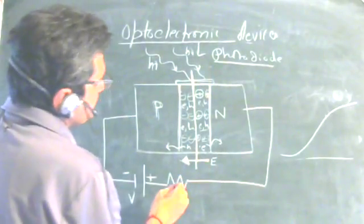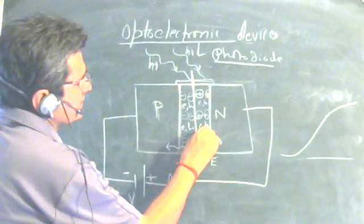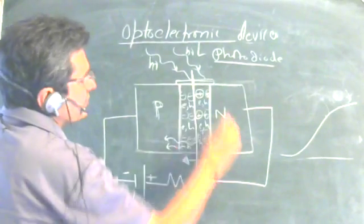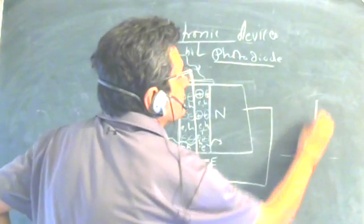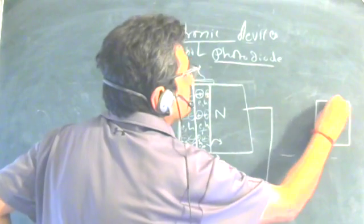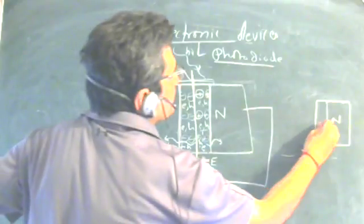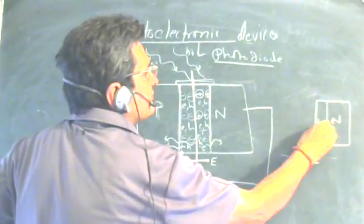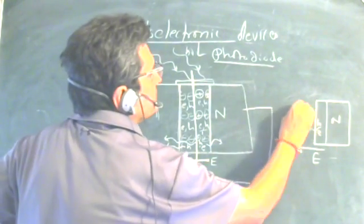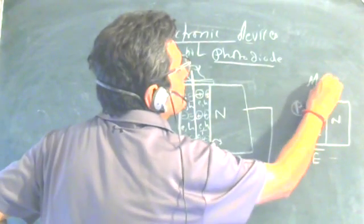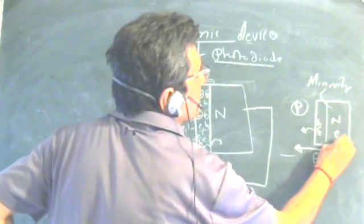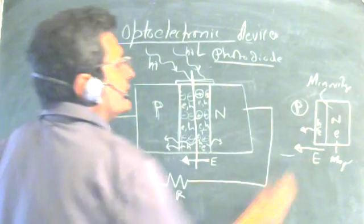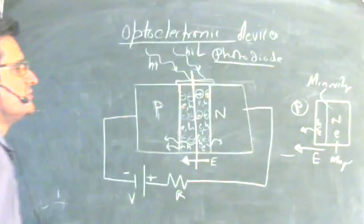The holes generated in the depletion region cross over from the N side to the P side — holes are minority carriers on the N side. The electrons created on the N side remain as majority carriers. The current is generated because of the crossing over of minority carriers — minority carriers from one side cross the junction boundary to the other side.